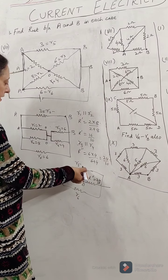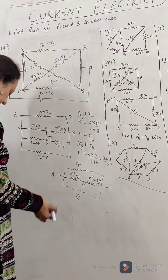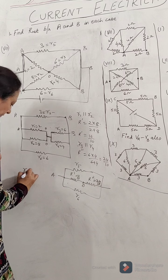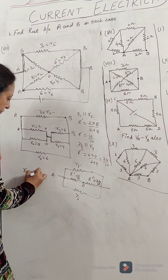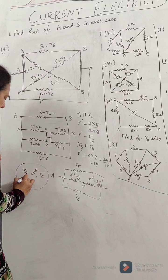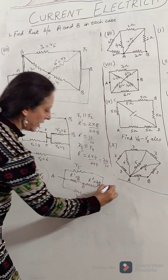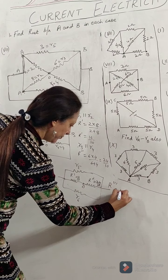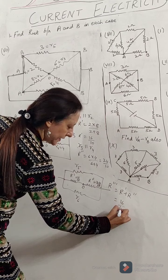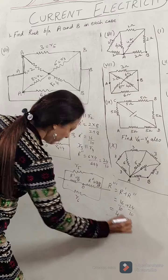So this 4 ohm, this R5 3 ohm, and this 6 ohm, they are in parallel. So R5 and R triple dash and R6 they are in parallel. And what is R triple dash? R triple dash is equal to R dash plus R double dash which is equal to 16 by 10 plus 24 by 10, comes out to be 40 by 10, comes out to be 4 ohm.